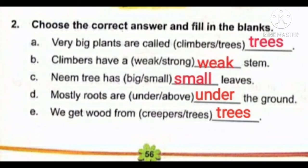Second: climbers have a dash stem. Climbers ka stem kaisa hota hai? Weak hota hai ya strong hota hai? Climbers ka stem weak hota hai, kamzor hota hai. Isliye woh apne aap se khade nahi ho paate. So the correct answer is weak.